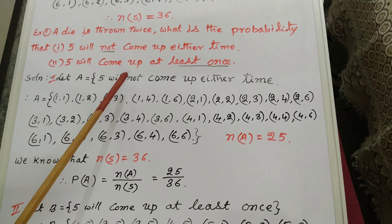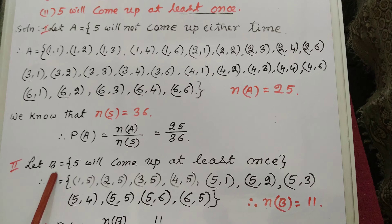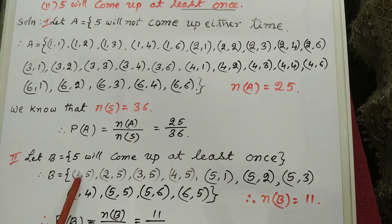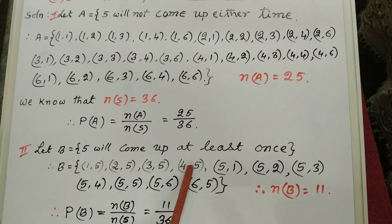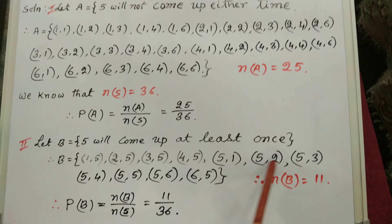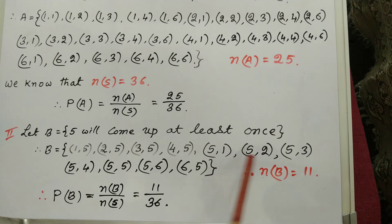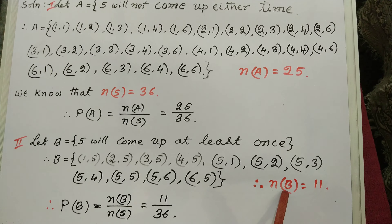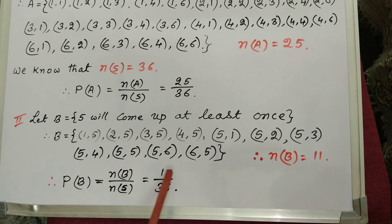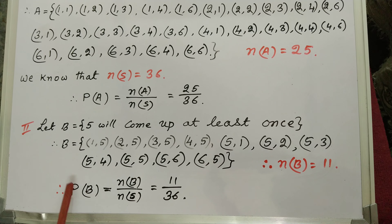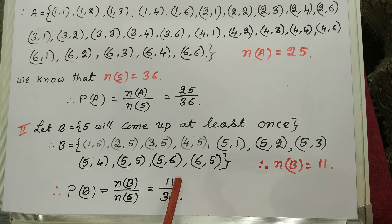Second probability: five will come up at least once. Let B be the favorable events. Five will come up at least once, so we take: (1,5), (2,5), (3,5), (4,5), (5,1), (5,2), (5,3), (5,4), (5,5), (5,6), (6,5). Totally, these are 11 outcomes. Therefore, favorable outcomes n(B) = 11, and probability P(B) = n(B) / n(S) = 11 by 36.